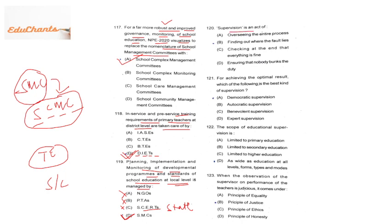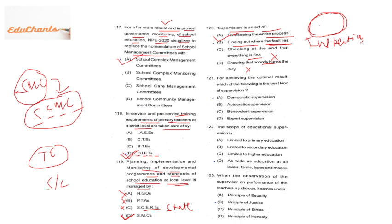Question 117: NEP 2020 visualizes renaming the School Management Committee (SMC) to School Complex Management Committee (SCMC) for more robust governance. Question 118: in-service and pre-service training requirements of primary teachers at district level are taken care of by DIET — District Institute of Education and Training. Question 119: planning, implementation, and monitoring of school education at local level is managed by SMCs — School Management Committees, which work at local level.